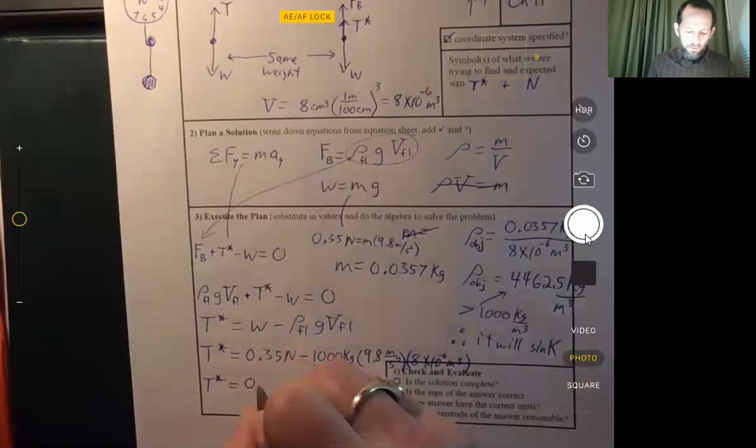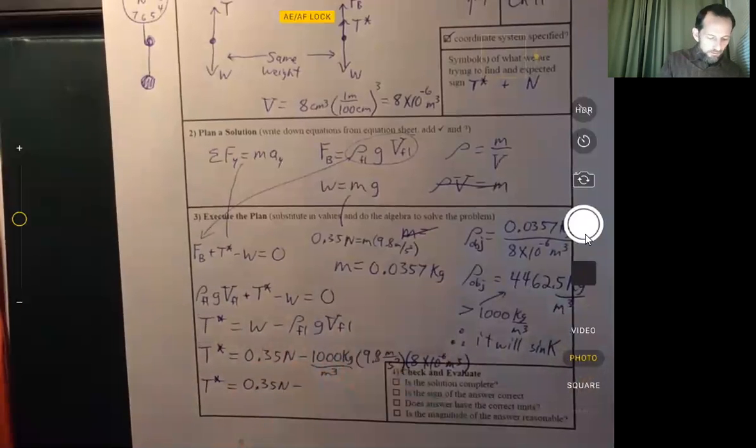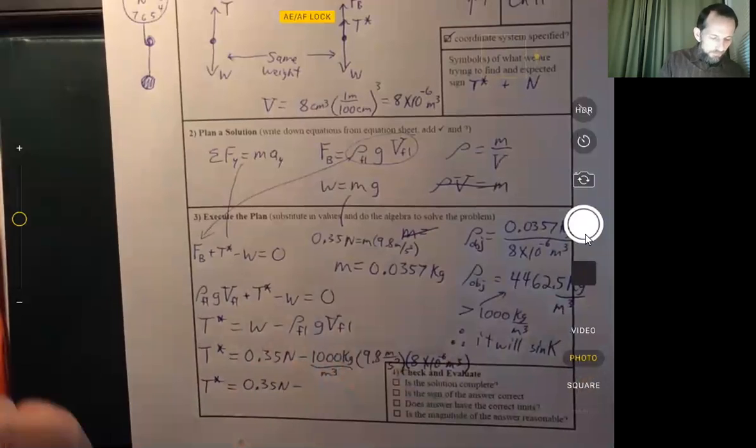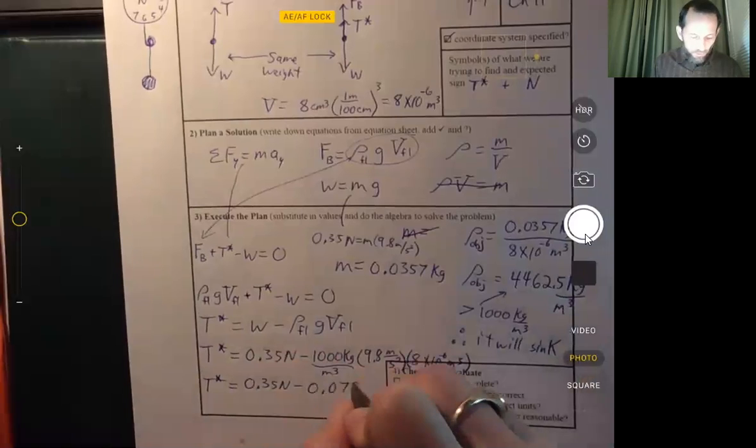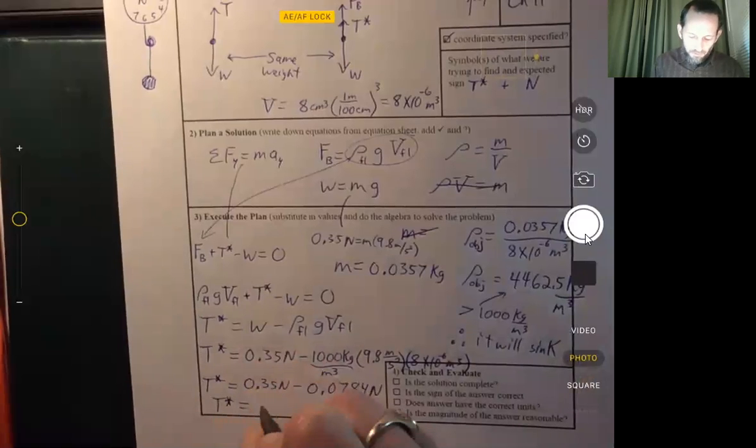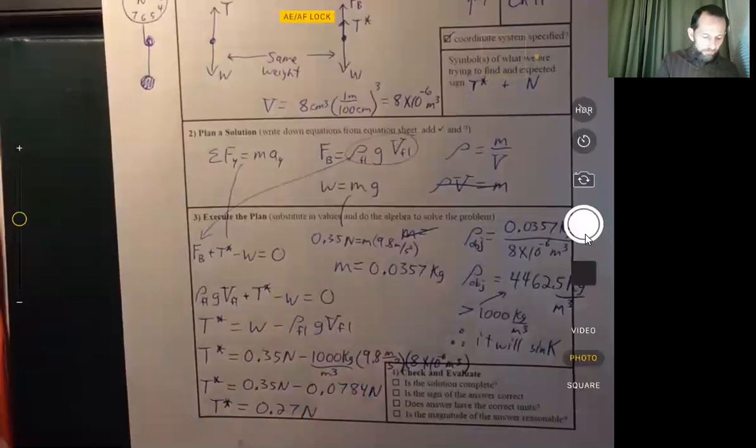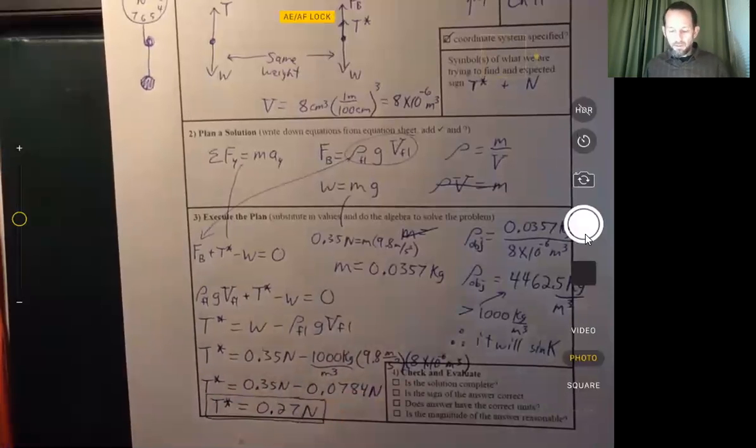And so we get 0.35 newtons minus, let's see what that comes out to, 0.0784 newtons. And so we subtract. And we get 0.27 newtons. And we rounded it to the hundredths place here. And there's your answer.